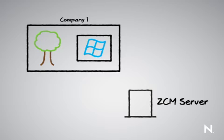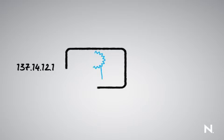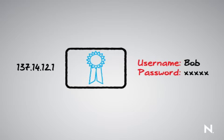To do that, you basically establish what we refer to as a user source, which is a connection from your Zenworks primary server back to one of those sources. To do that, you simply need the IP address, potentially a certificate, as well as a set of credentials that you can use to have Zenworks log in.